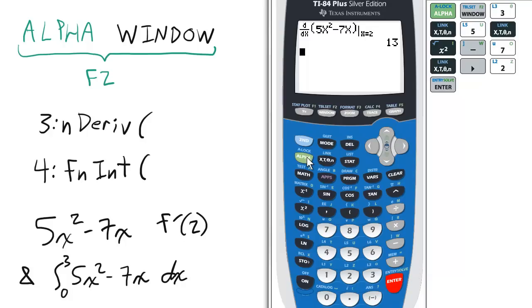We can do the shortcut for the integral. Press alpha and then window and then 4 for fn int. Now the lower bound will be 0. Scroll up to the upper bound for 3.